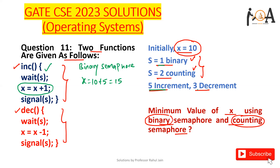After the increment operations bring x to 15, we then apply the 3 decrement operations, bringing it down to 12. Using binary semaphore, the minimum value of x is 12. This is the minimum value — you can do it in any order, but 12 will always be the answer with binary semaphore.